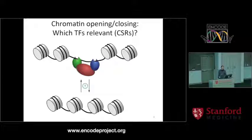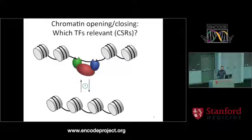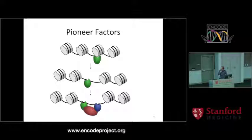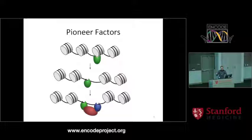The ENCODE project showed that DHS regions really nicely delineate where transcription factors bind. But what is not quite clear is how the transition happens from closed chromatin to open chromatin — for certain transcription factors, it could be cause or consequence whether they bind or not. One aspect that has been studied is pioneer factors: transcription factors that bind closed chromatin and then have the ability to open it up and let other factors bind.